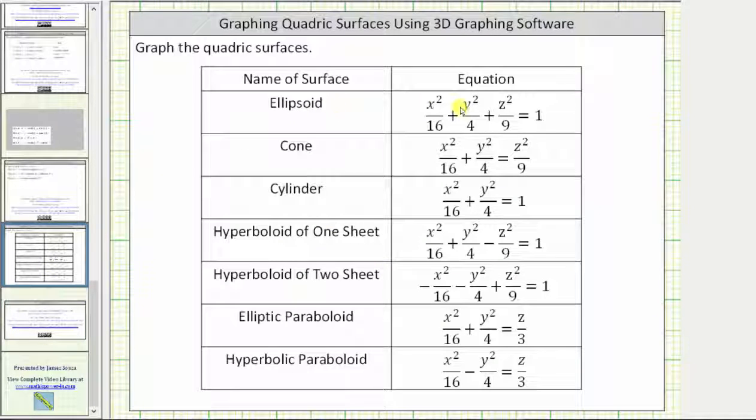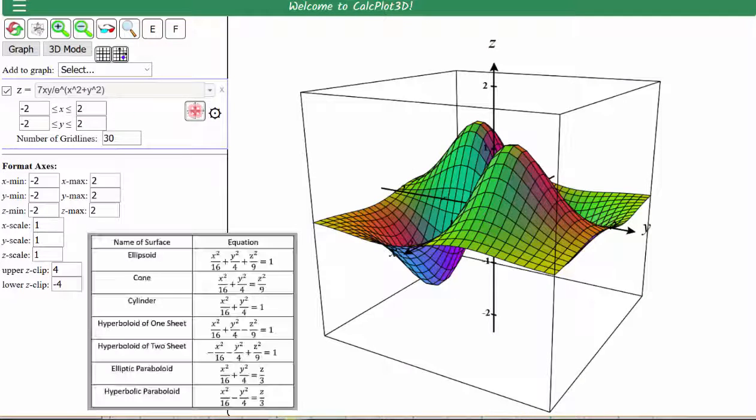Let's open up the app and graph this ellipsoid. Once the app is opened, this is the default surface that is always graphed. Because we'll be entering implicit equations, let's go ahead and clear the graph in this window by checking this box here on the right.